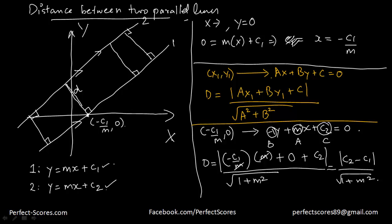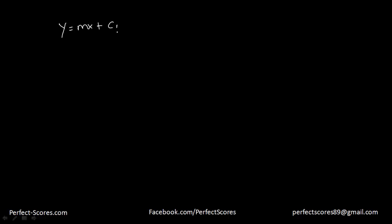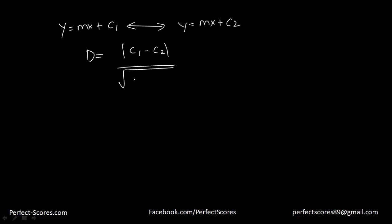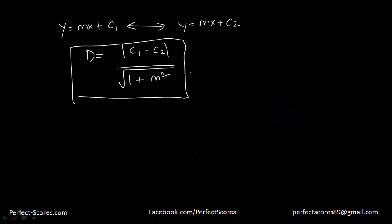This simplifies to the final expression: the distance between the two parallel lines y = mx + c1 and y = mx + c2 is given by |c1 − c2| divided by the square root of (1 + m²). This is a very important expression for the distance between any two parallel lines. I hope you're understanding this. Thank you very much for watching and I'll see you in the next one.